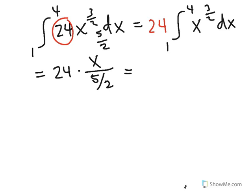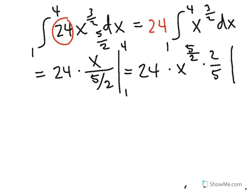This also means we can take 24, oops, I forgot my limits of integration here. They're going to be from 1 to 4. We can take the 24 times x to the 5 halves, times the reciprocal of this fraction in the bottom, which is 2 fifths. We're going to have that entire thing evaluated from 1 to 4.